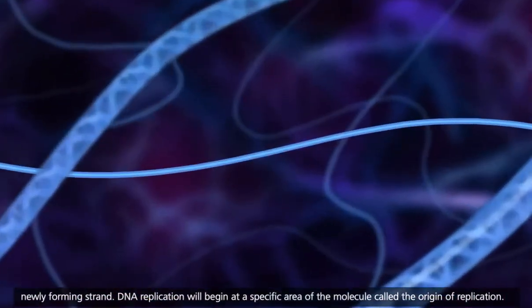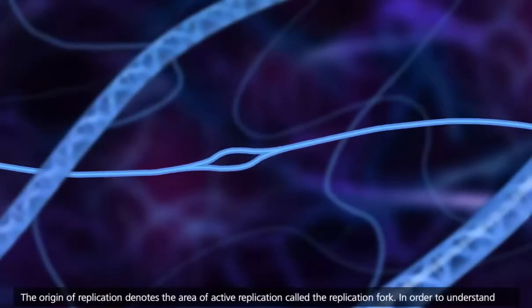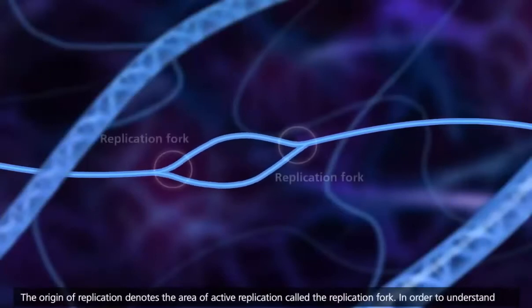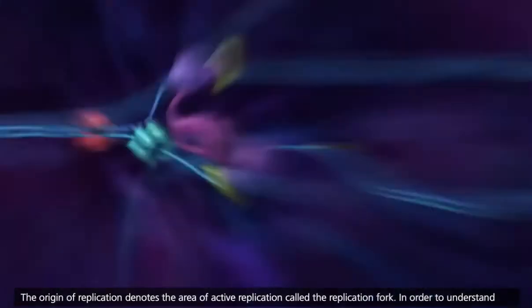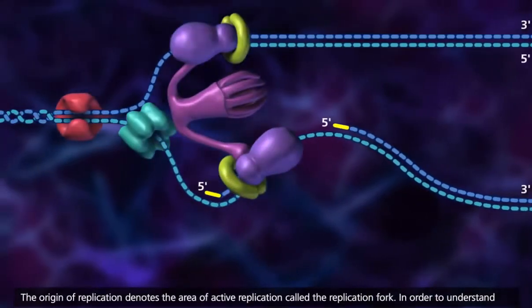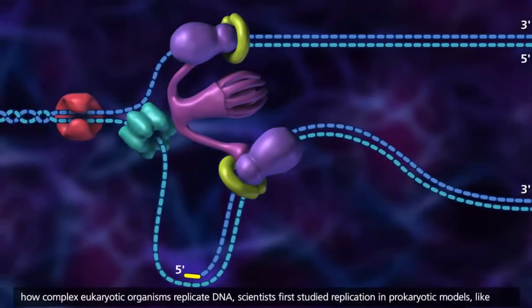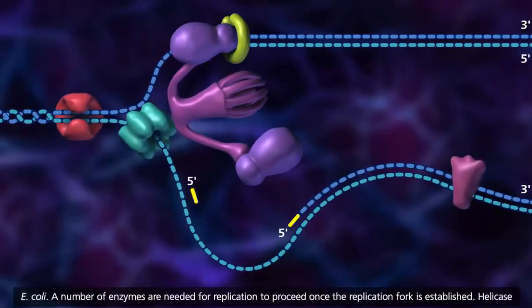DNA replication will begin at a specific area of the molecule called the origin of replication. The origin of replication denotes the area of active replication called the replication fork. In order to understand how complex eukaryotic organisms replicate DNA, scientists first studied replication in prokaryotic models like E. coli.